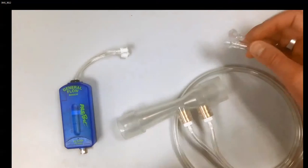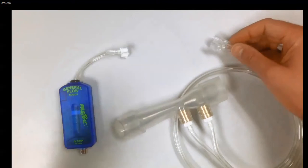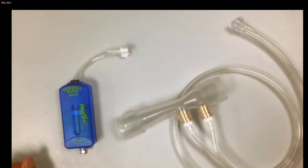On the top of the Venturi tube, we have the corresponding two tubes that match with those pressure connectors at the top of the general flow sensor.